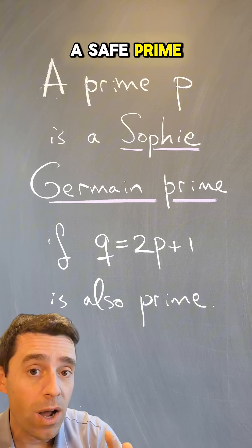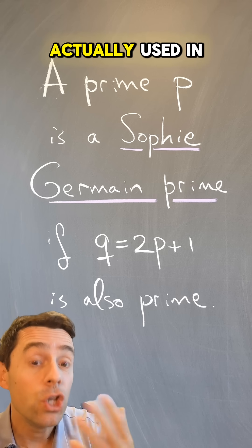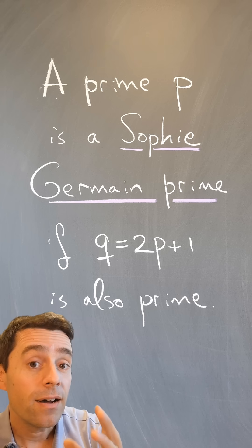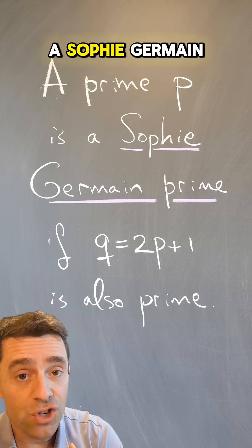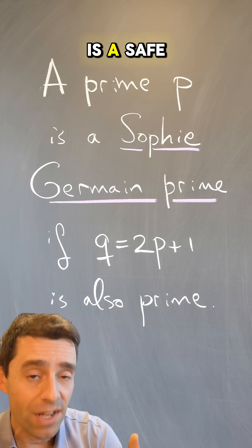5 is called a safe prime because these are actually used in cryptography. 3 is prime and 7 is prime, so 3 is a Sophie Germain prime and 7 is a safe prime.